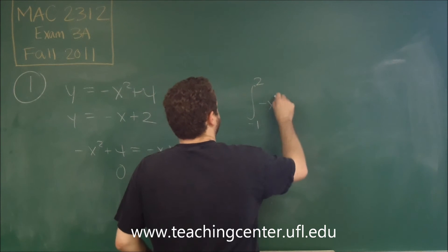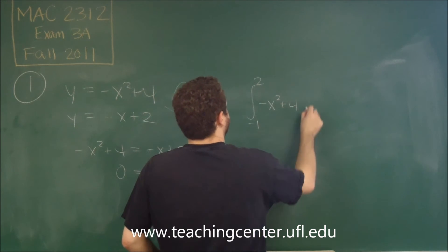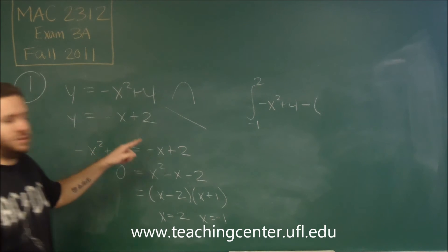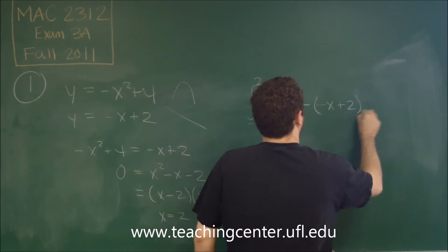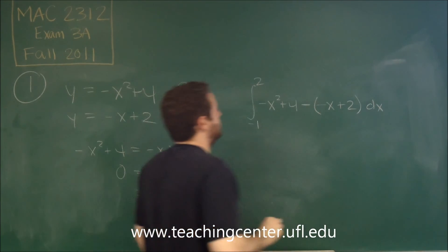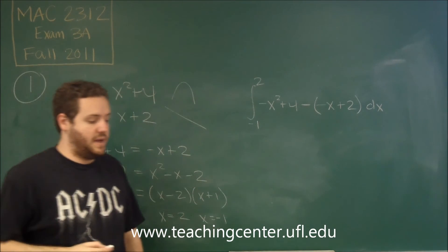So we take negative x squared plus four, the higher function, and subtract the lower function. And this is the integral that would give us the area.